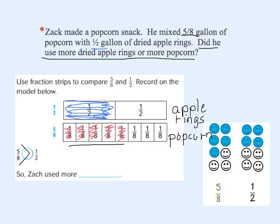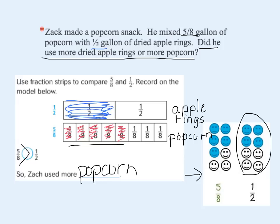You can also see it by a simple model where we have drawn little happy faces — we have a total of eight and we've shaded in five of the eight for popcorn. Then using eight again, I shaded in half of eight, which is four, so we colored in four of the smiley faces for apple rings. Again, you can see that five-eighths is greater than one-half.